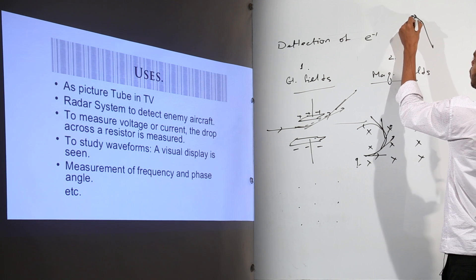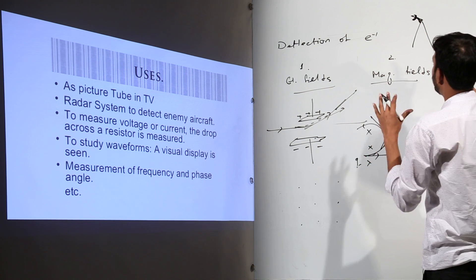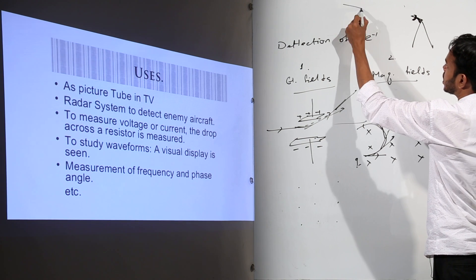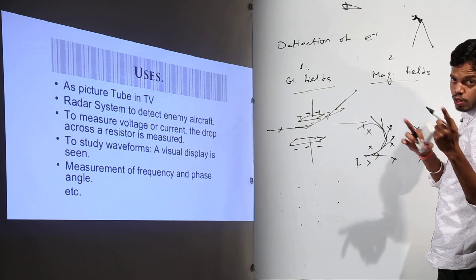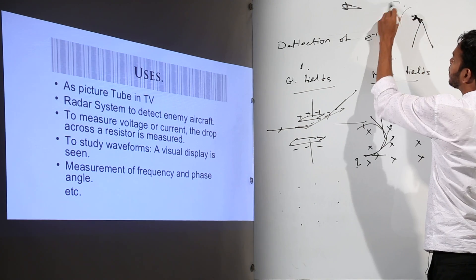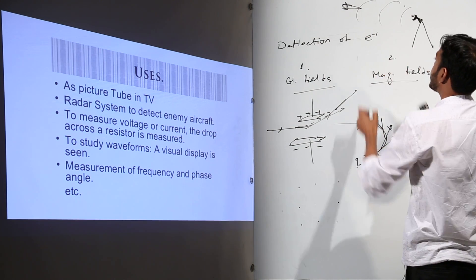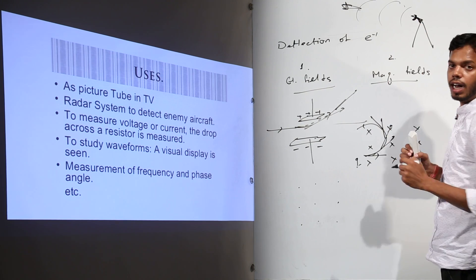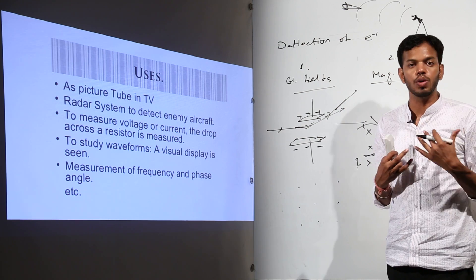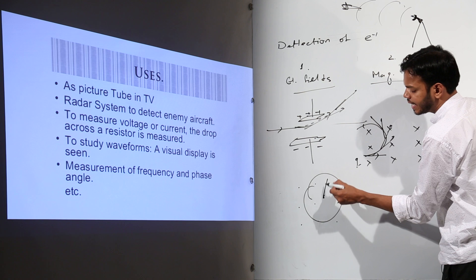This is the world's baddest drawing of a radar but let us assume it is a radar. Now suppose this is an enemy aircraft, this is also another bad drawing. So when the rays which are getting reflected from the aircraft and which are coming back to the radar.